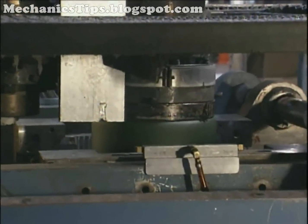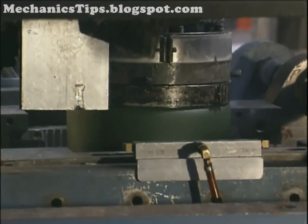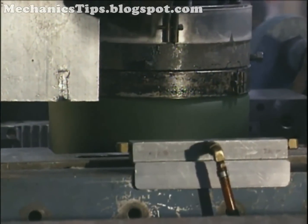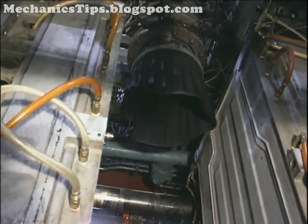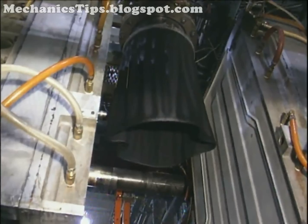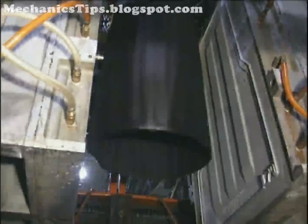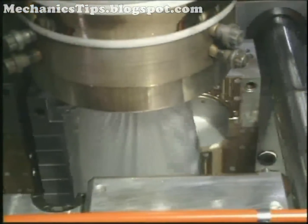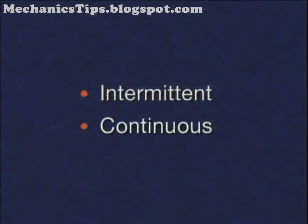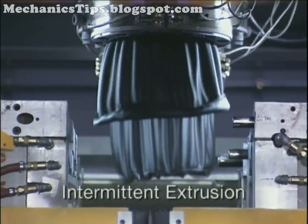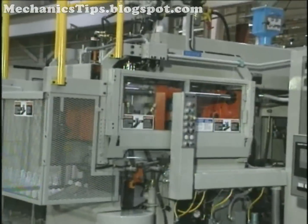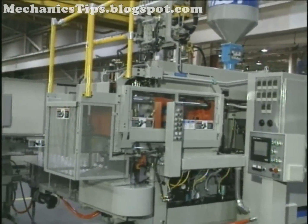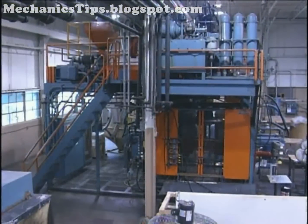The process of extrusion blow molding involves applying heat and pressure to thermoplastic resin to produce what is called the melt. This melt is then forced through a die to produce a parison, which is then dropped, trapped, or conveyed to an open blow mold for subsequent blow molding. Extrusion blow molding uses either an intermittent or continuous method for the formation of the molten parison. Intermittent extrusion produces a parison only when the blow mold is ready, using either a reciprocating screw or an accumulator and ram style machine.